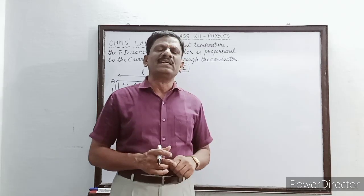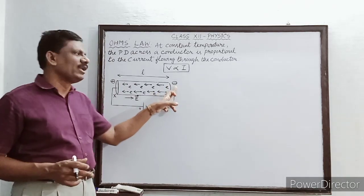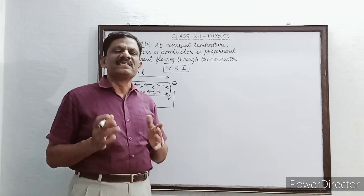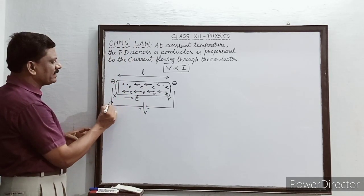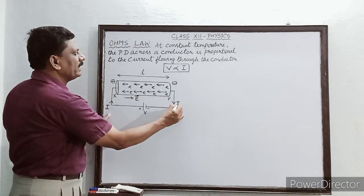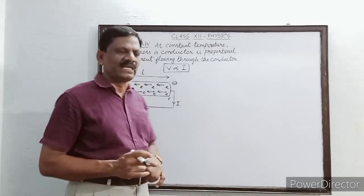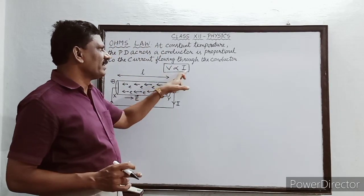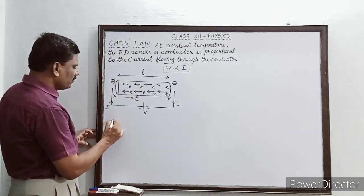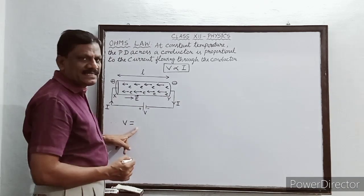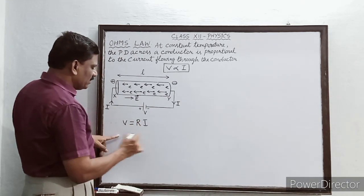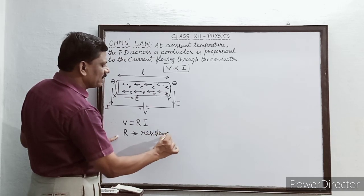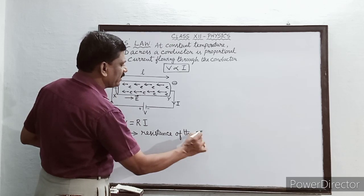Two types of current: the electron current, due to the flow of negatively charged electrons from lower to higher potential, in a direction opposite to the electric field; and the conventional current, represented by the symbol I, due to the flow of positive charges from positive to negative potential. According to Ohm's law, V is directly proportional to I, so V = RI, where R is the constant of proportionality called the electrical resistance of the conductor.